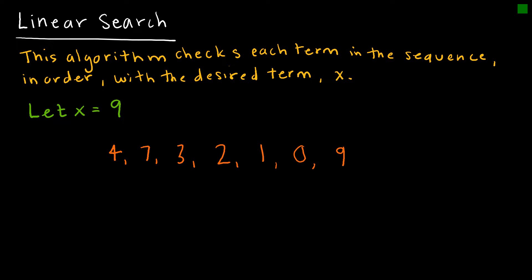We're going to look at just two of the search algorithms. Obviously, there are many more. But the first we're going to look at is the linear search algorithm. That one basically just checks each term in the sequence until it arrives at the desired term. Here's my list of values, and I'm looking for the term x.